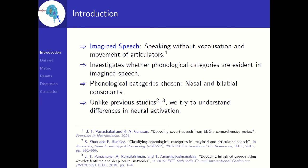Imagined speech, as the name suggests, is imagining something without any vocalization or intentional movements of any articulators such as lips, tongue, etc. In this work, we investigated whether phonological categories exist in imagined speech. The existence of phonological categories may look counterintuitive since phonemes are classified into phonological categories based on the manner and place of articulation, both of which are absent in imagined speech. Unlike some previous works, we tried to understand the difference in neural activation across different EEG bands rather than adapting an agnostic ML approach for classification.